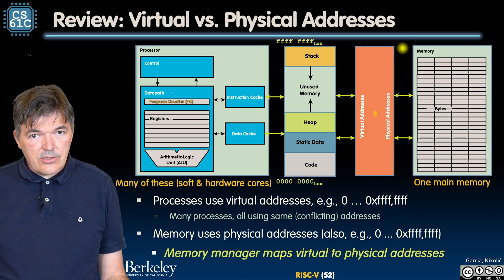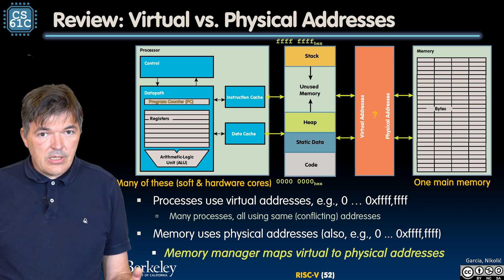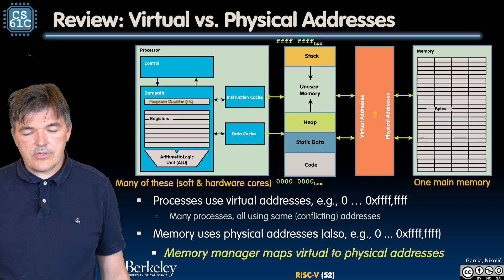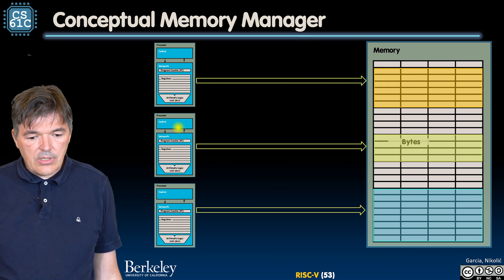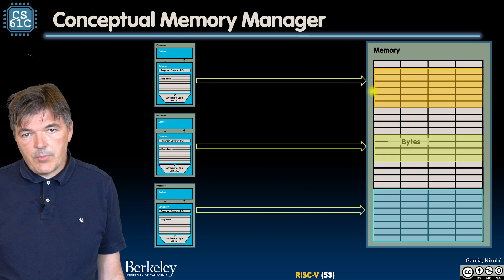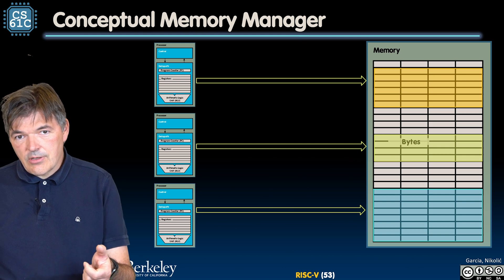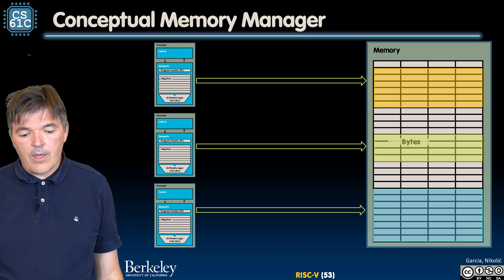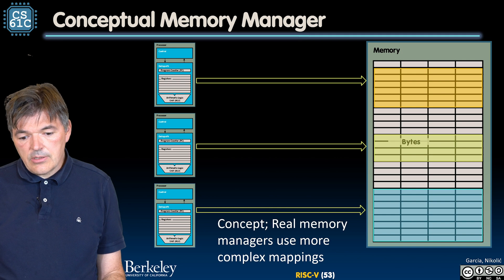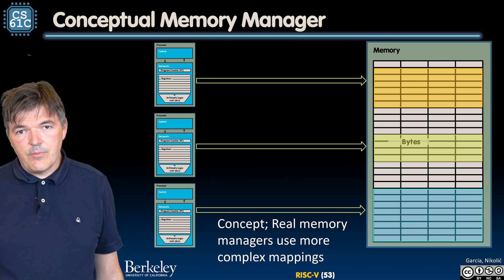That translation is owned by something called the memory manager. The memory manager is the component that maps virtual addresses to physical addresses. Each process, although it thinks it is running from address zero to the top, actually gets to use only a part of the physical memory. These parts are not necessarily contiguous as drawn here — in practice, they are interleaved and all over the place, mixed with each other.